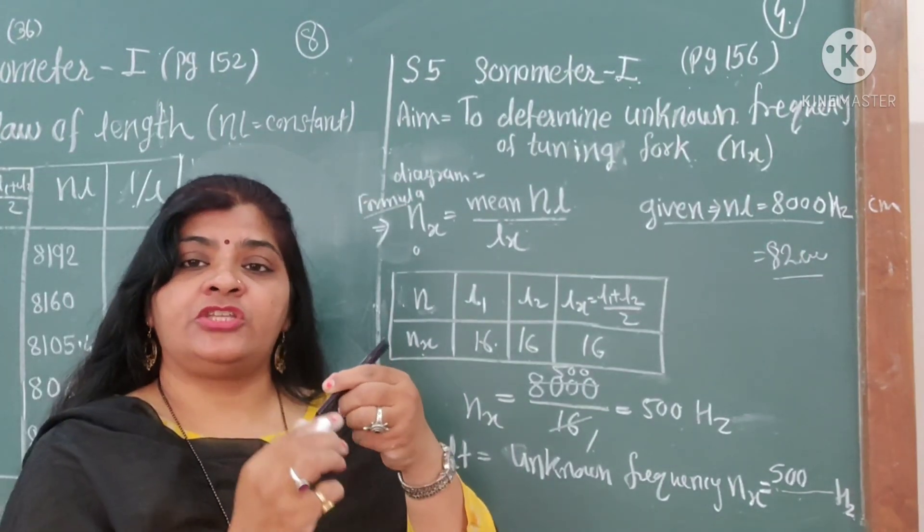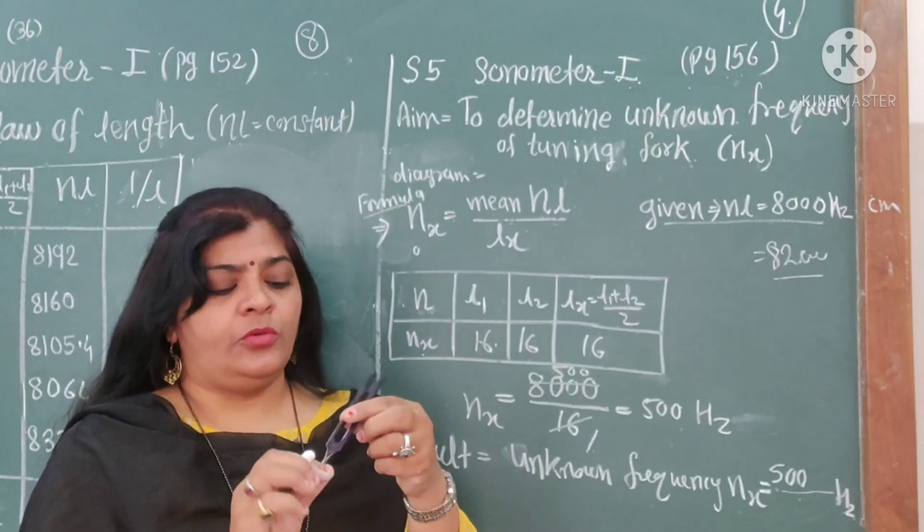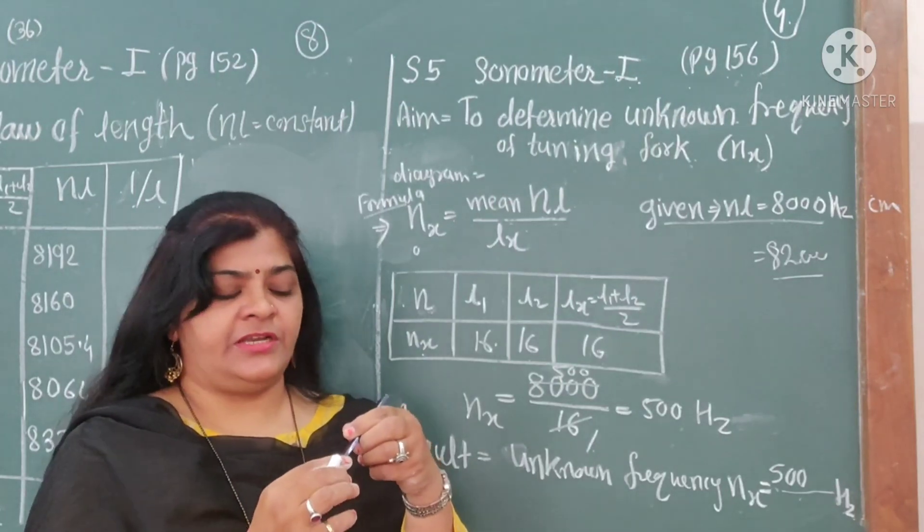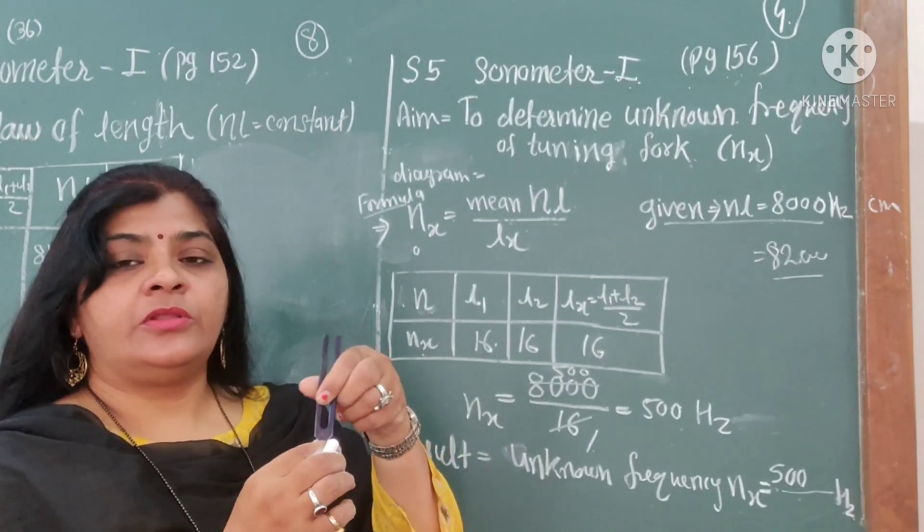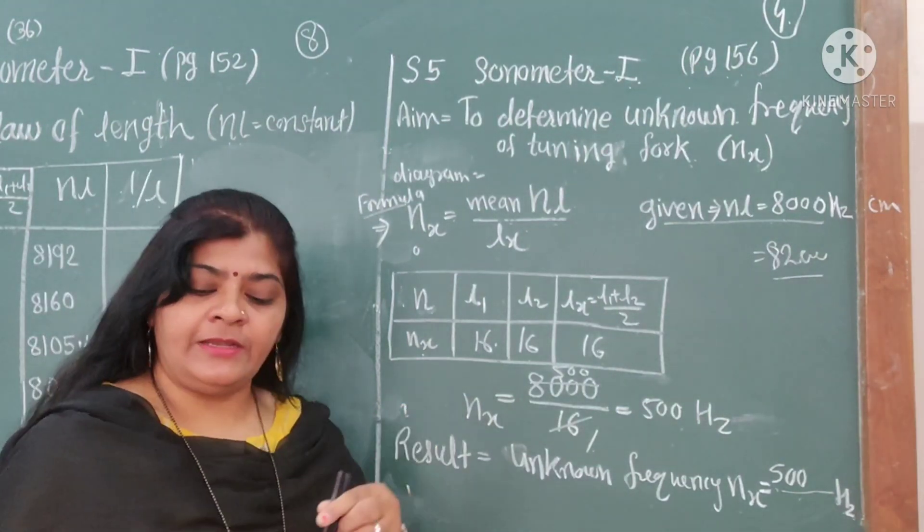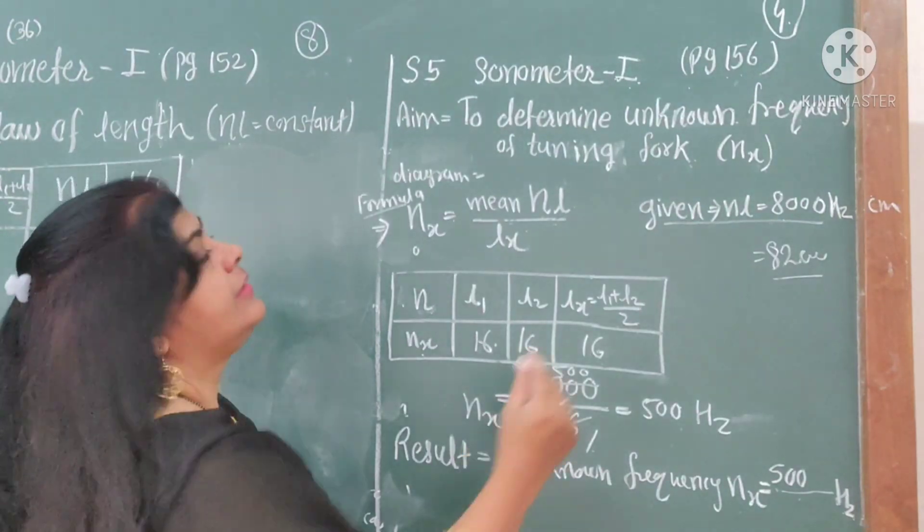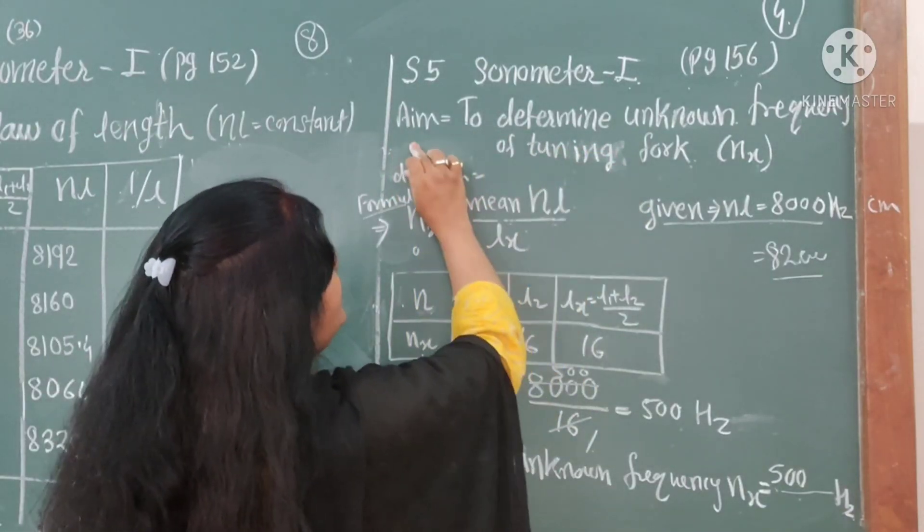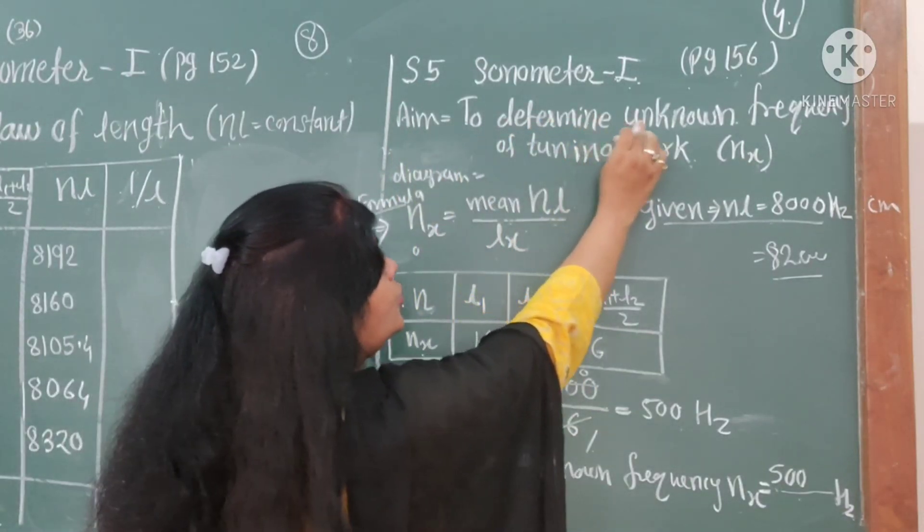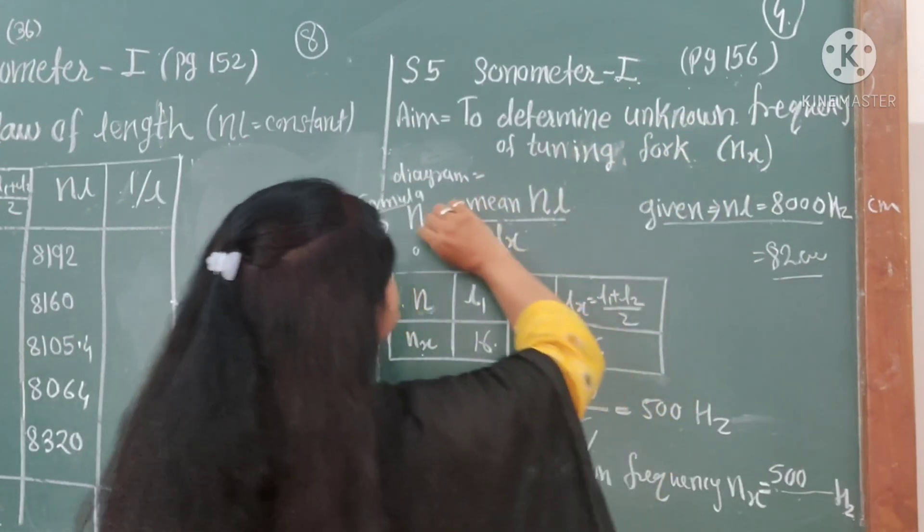Here a paper is attached on it, that's why you can't see the number printed on this tuning fork. You have to find out that number. You are finding the value of this tuning fork. That's why first write the aim: to determine the unknown frequency of tuning fork NX.